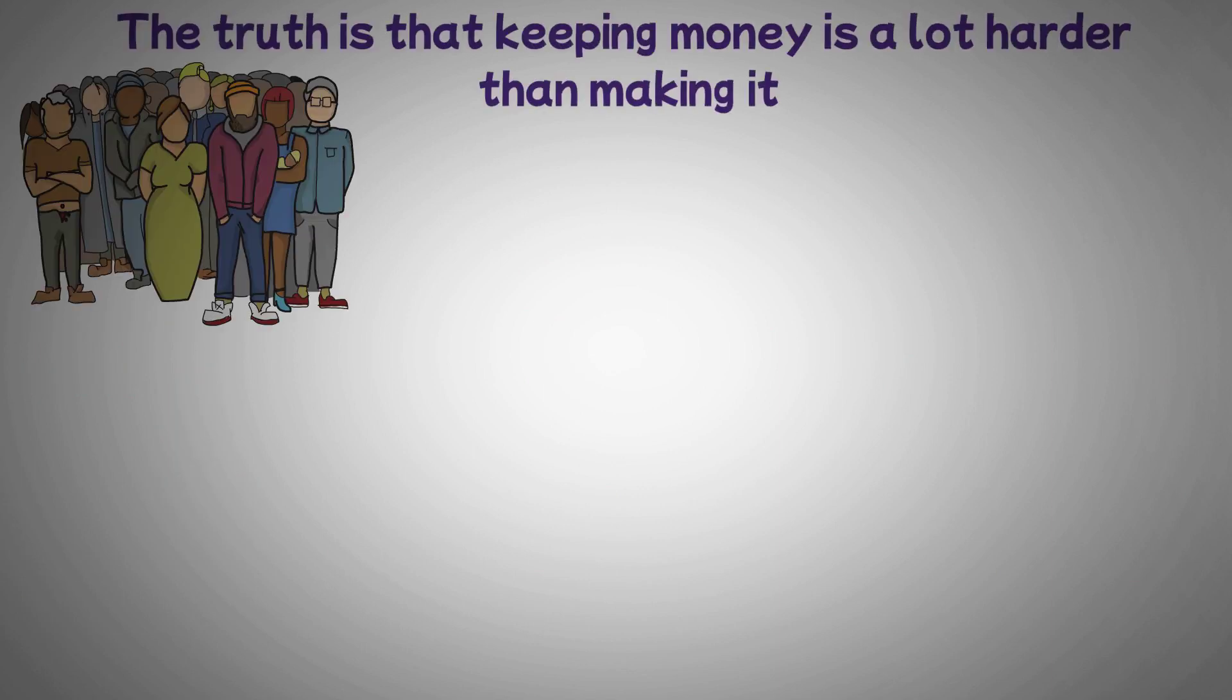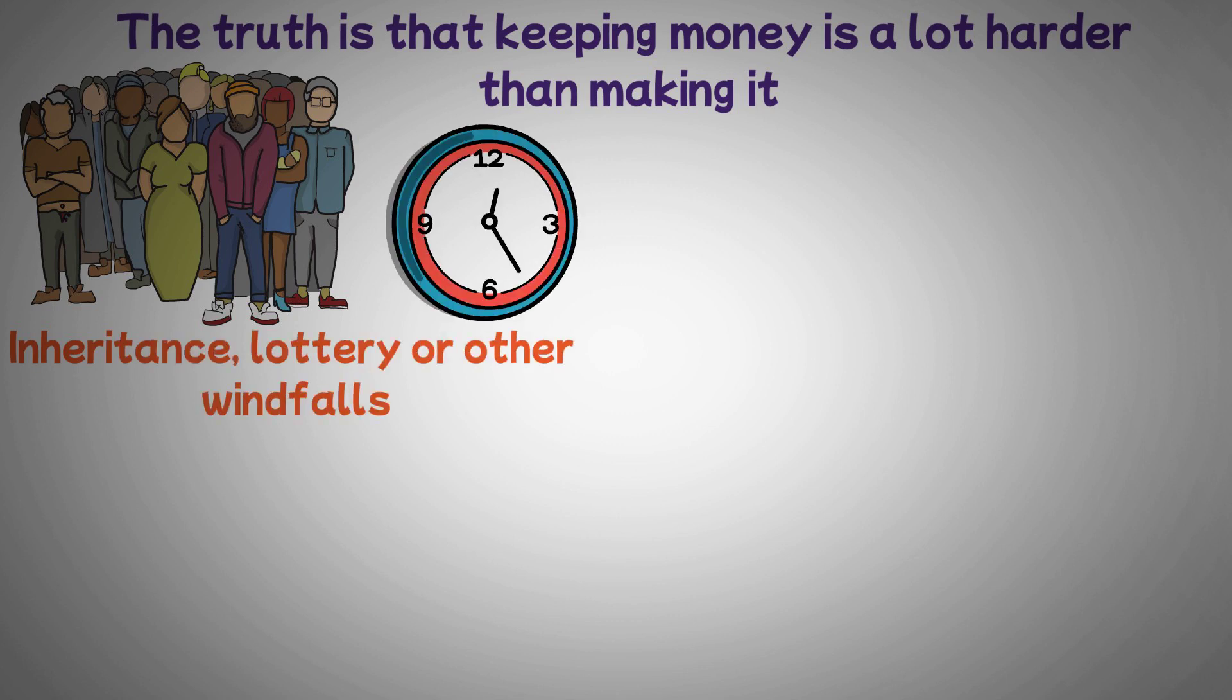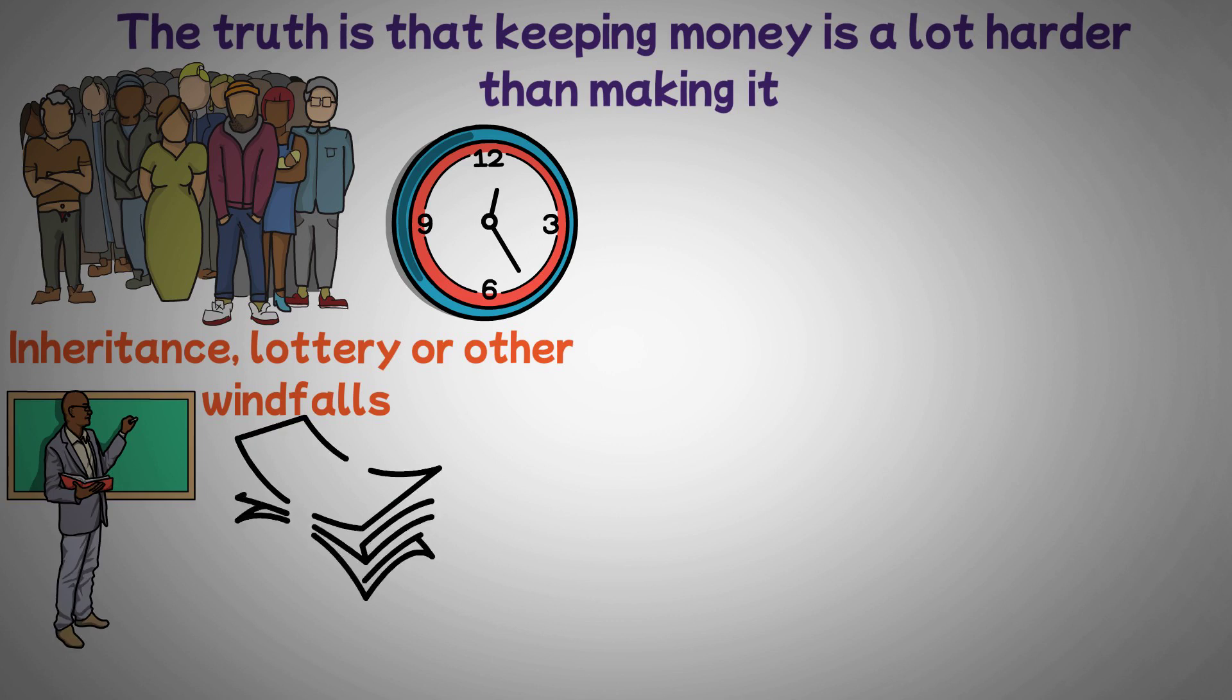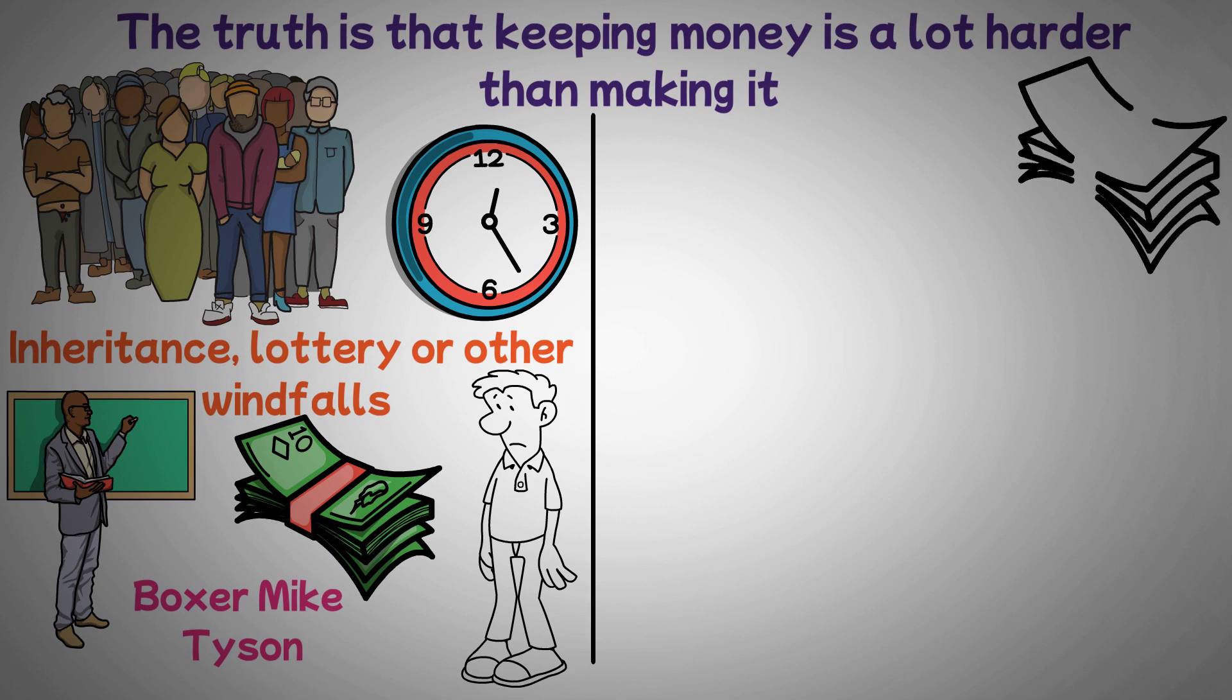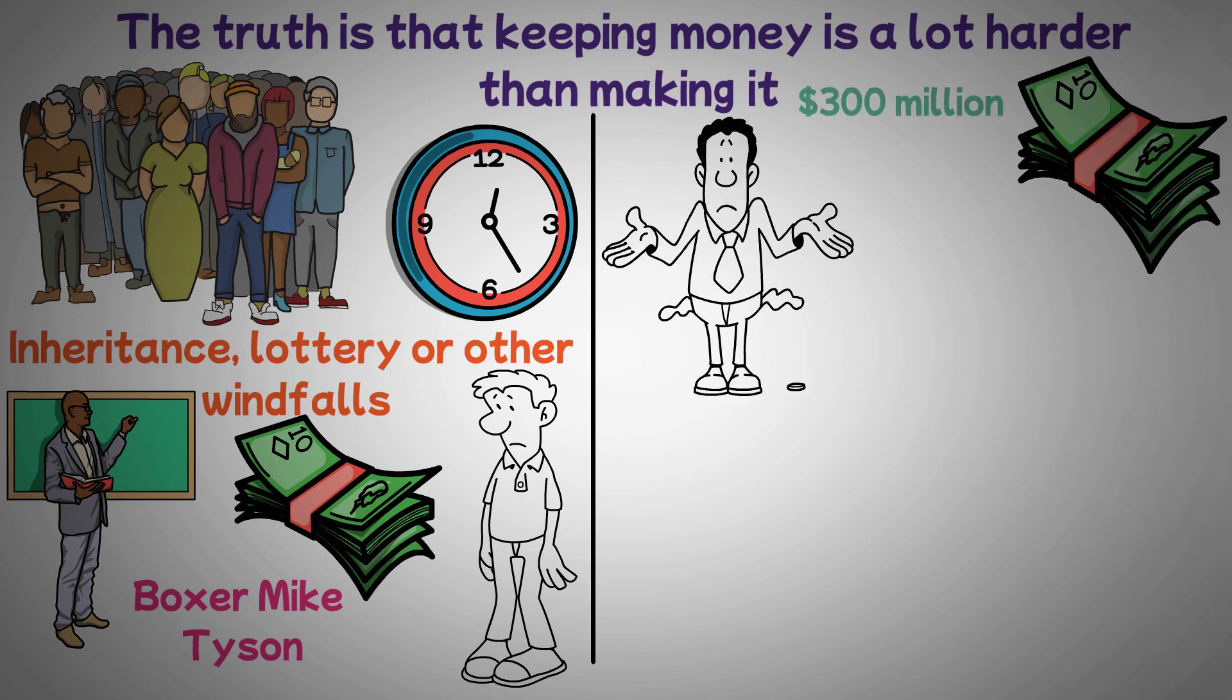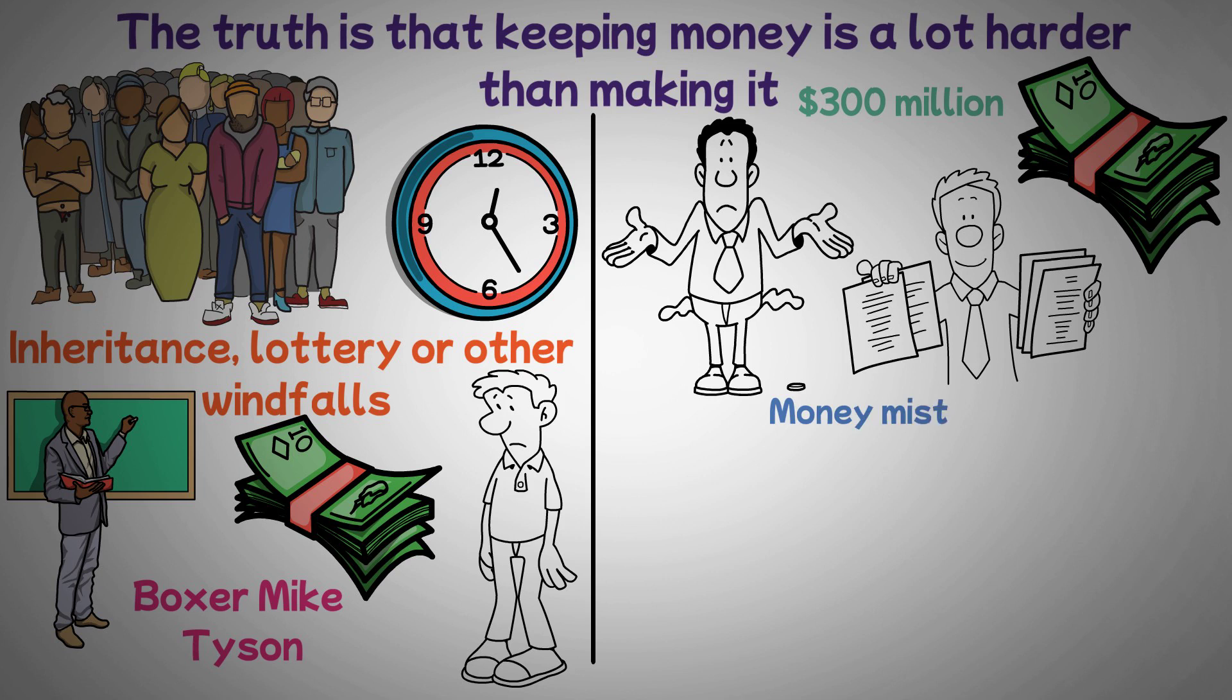The truth is that keeping money is a lot harder than making it. It's not uncommon to see people who come into wealth through inheritance, lottery, or other windfalls and lose it in a short amount of time. A good example is the famous boxer Mike Tyson. Despite earning over $300 million in his career, in 2003 he declared bankruptcy and was reported to be in more than $20 million worth of debt. Needless to say, money mistakes happen, and these mistakes can cripple your finances no matter how much money you make.